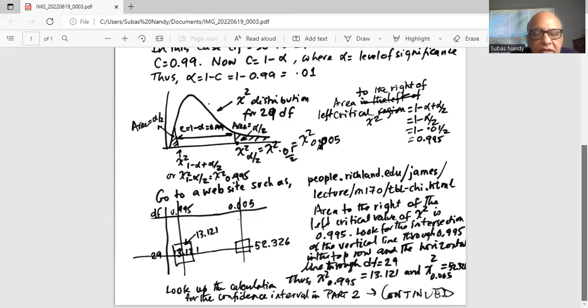Similarly, the area in the right tail is 0.005. We find that by drawing the vertical line to 0.005 in the top row and horizontal line through degrees of freedom 29. Those lines intersect at 52.326.